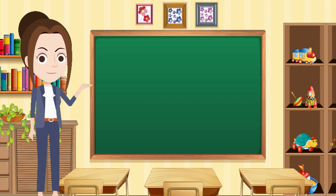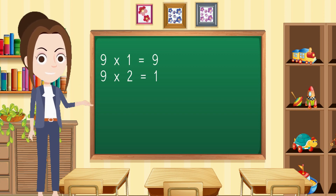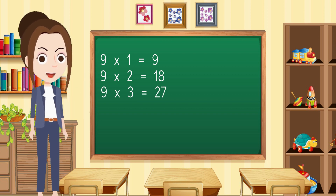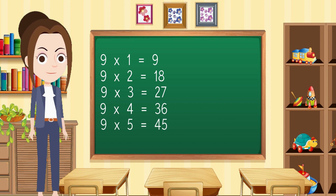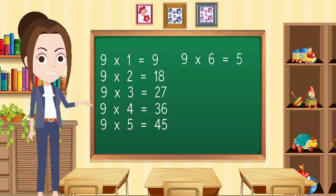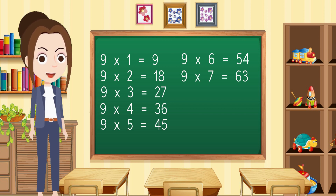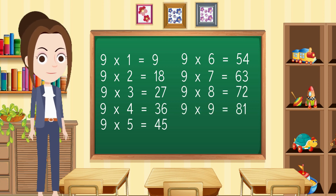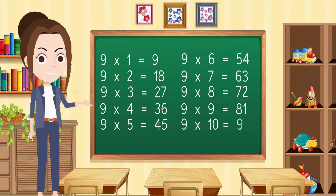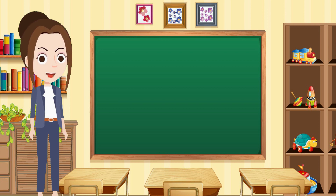Now repeat again: nine ones are nine, nine twos are eighteen, nine threes are twenty-seven, nine fours are thirty-six, nine fives are forty-five, nine sixes are fifty-four, nine sevens are sixty-three, nine eights are seventy-two, nine nines are eighty-one, nine tens are ninety.